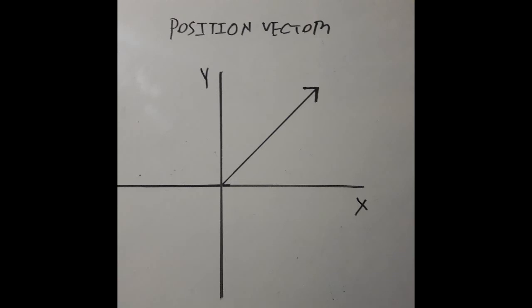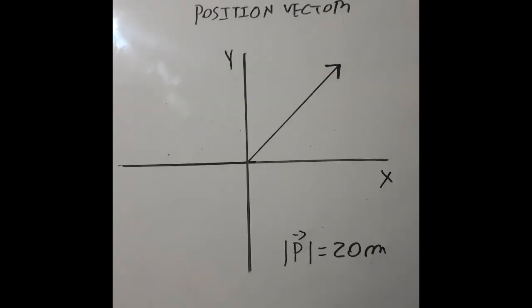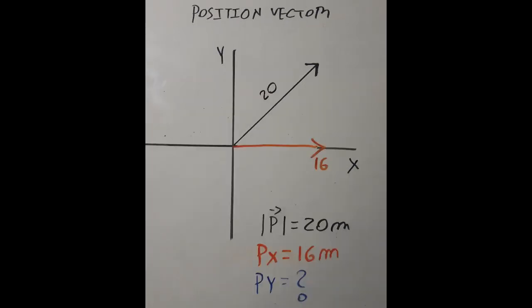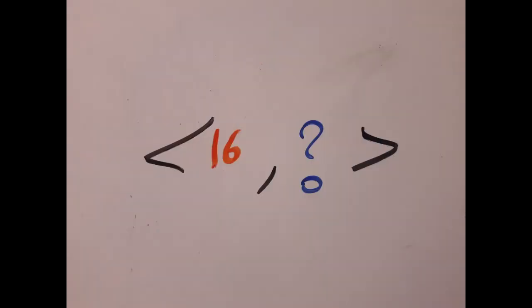Now we have the vector in a canonical way placed on the Cartesian plane. We can see that the vector is pointing right and up. Its magnitude is 20 meters and the x-component of the vector is 16 meters.